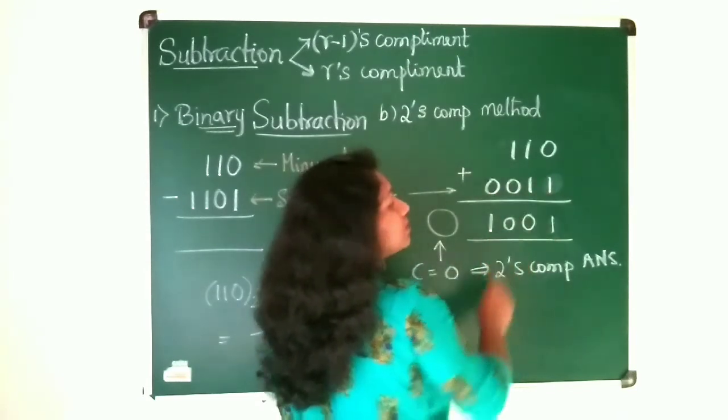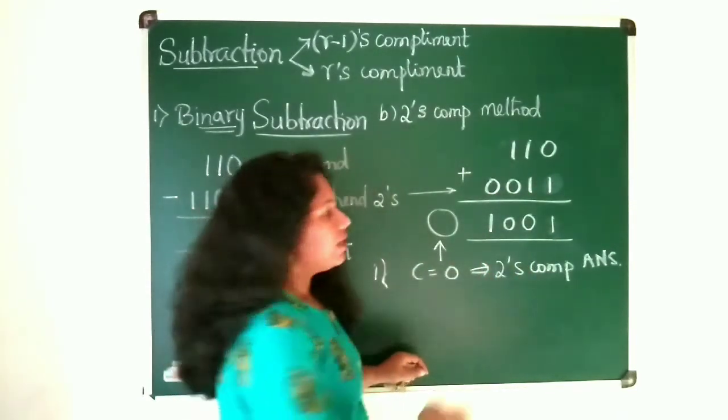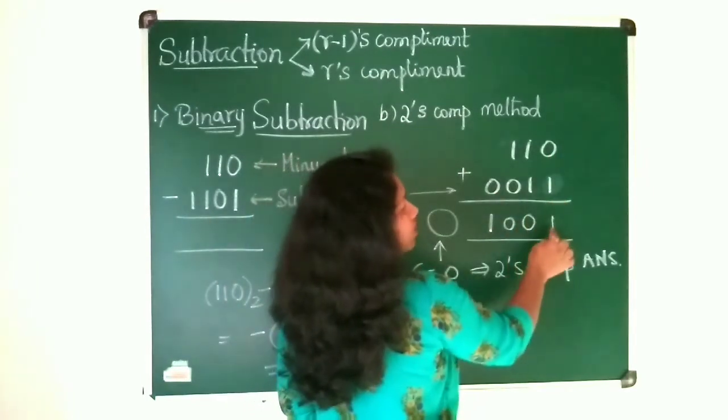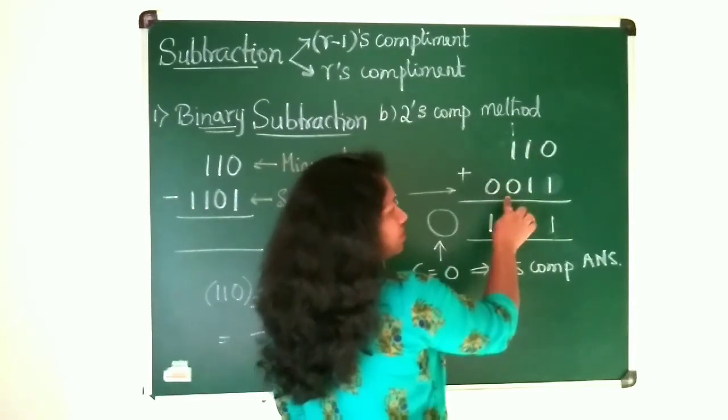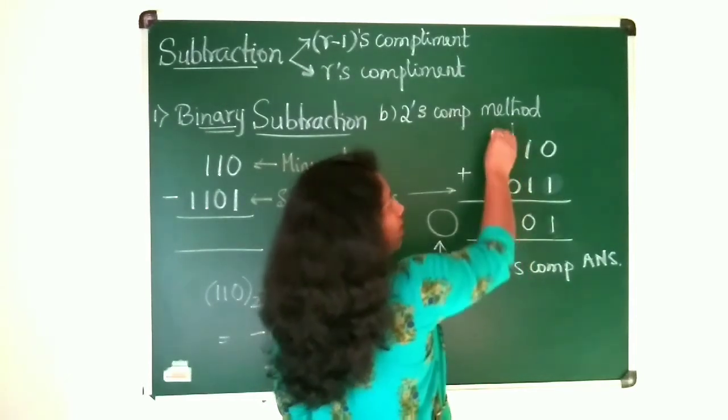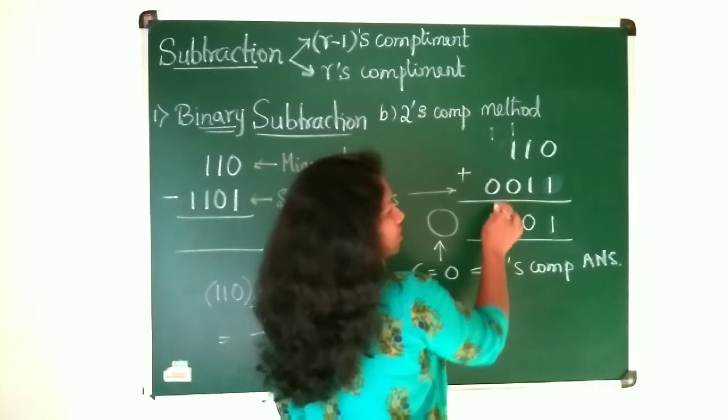And then this is subtrahend, 0, 0, 1, 1 is the 2's complement of the subtrahend. Now add 0 plus 1 is 1, 1 plus 1 is 0, 1 carry. And then 1 plus 1 plus 0 is 0 sum and 1 carry. 1 plus 0 is 1.